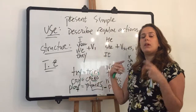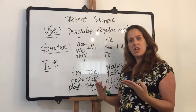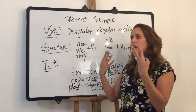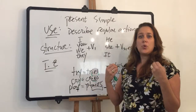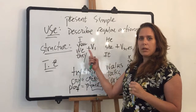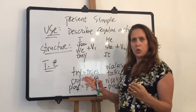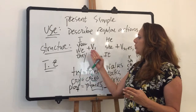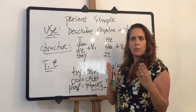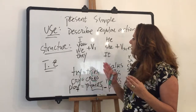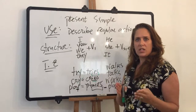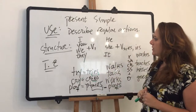So again, I have to describe an action that repeats itself — something regular, something that I always do, something I do every day, something I do once a month. I have to remember to divide my pronouns into two groups. The first group — I, you, we, and they — gets the verb as it is. The second group — he, she, and it — gets the verb with an addition: S, ES, or IES.